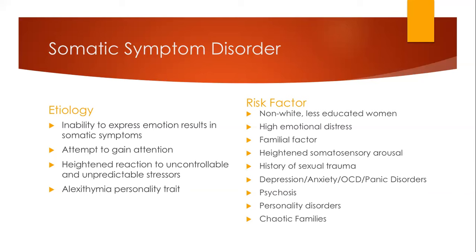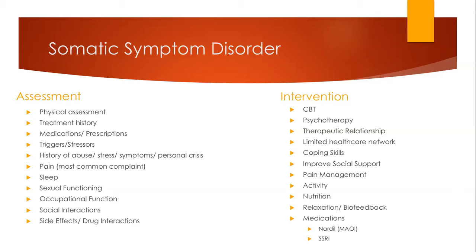When assessing patients with somatic symptom disorder, we want to assess their physical symptoms with a full physical assessment. The most common physical symptoms we see are dysmenorrhea, feeling like they have a lump in their throat, vomiting, shortness of breath, burning or pain in different organs, pain in their limbs, amnesia, headaches, and stomach aches. More uncommon symptoms we can see include paralysis, urinary retention, and confusion.